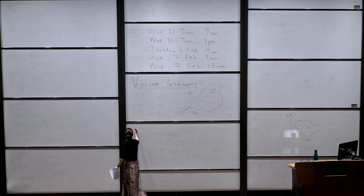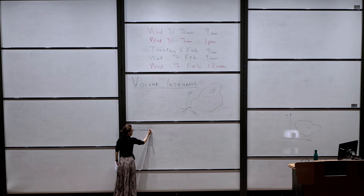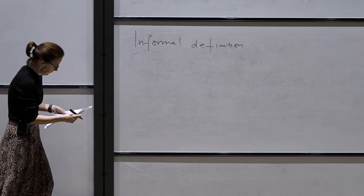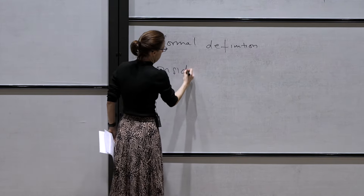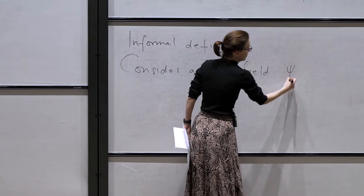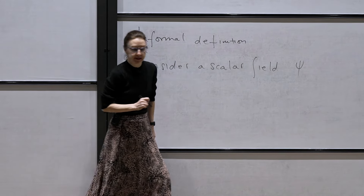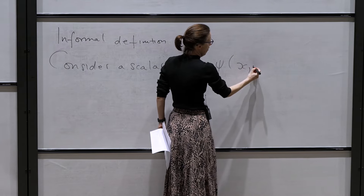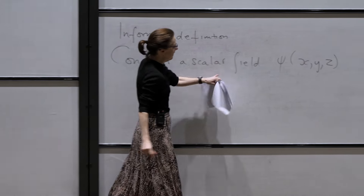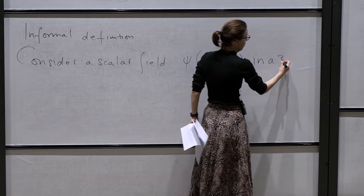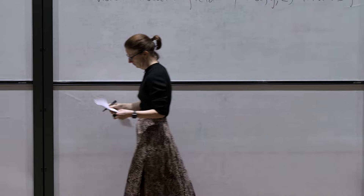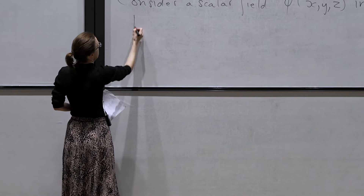Let's start with an informal definition. Suppose we have some scalar field — let's suppose we consider a scalar field psi, which instead of being a function just of two variables, is going to be a function of x, y, and now also of z. The scalar field is going to be defined in a 3D region in R³, and we're going to call the region R.